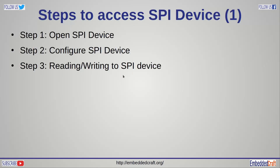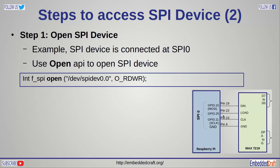Accessing an SPI device is a three-step process. Step 1: open SPI device. Step 2: configure SPI device. Step 3: read and write to SPI device. Let us see these steps in detail. Considering that the SPI device is connected to SPI0 interface, the first step is to open it: call open() with path /dev/spidev0 and access flag O_RDWR, meaning we want to open the SPI device in read-write mode. This open call will return a handle to the SPI device.